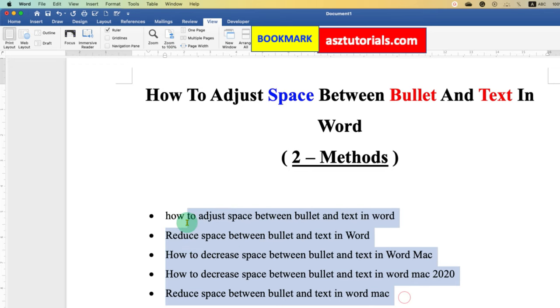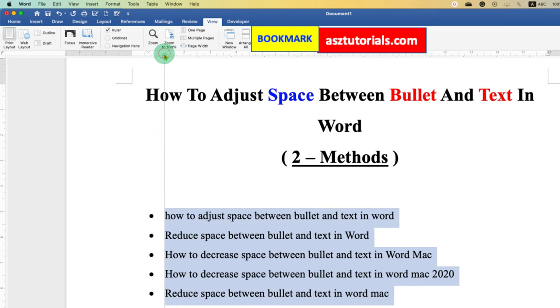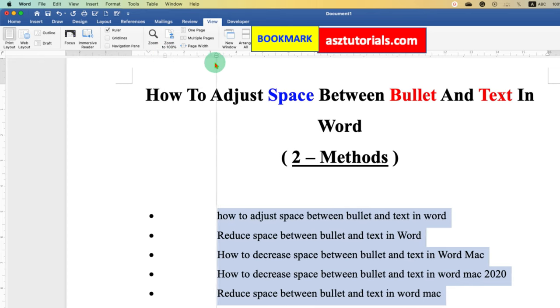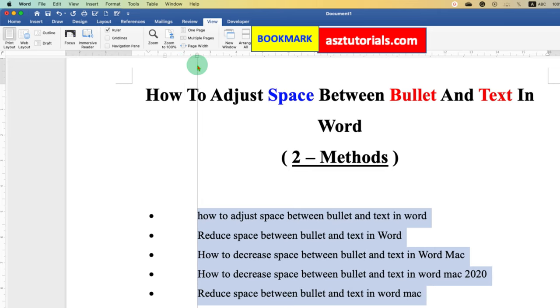So, we just have to select the text. Click and hold on the left indent option. You will see this dotted line. Now, you can move it to the right side or left side like this. And adjust to increase or decrease the space between bullet and text.